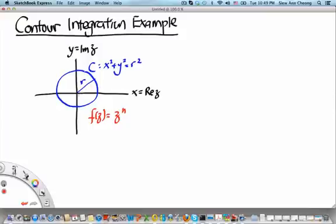Now before we can perform this integration, we note that the absolute value of the complex number z is always equal to r along this contour.